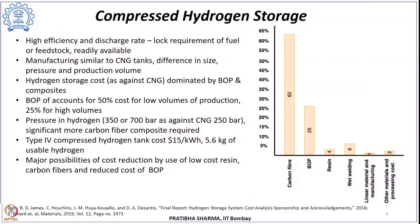Compressed hydrogen storage in tanks has high efficiency and we can get a high discharge rate depending upon the requirement of fuel and feedstock. These can be readily available wherever required. Compressed hydrogen tanks are manufactured in a similar manner to compressed natural gas tanks — like type 4 tanks made up of an inner liner with a completely wrapped fiber resin composite. The differences are in terms of size, the pressures at which they operate and store, and the production volume.